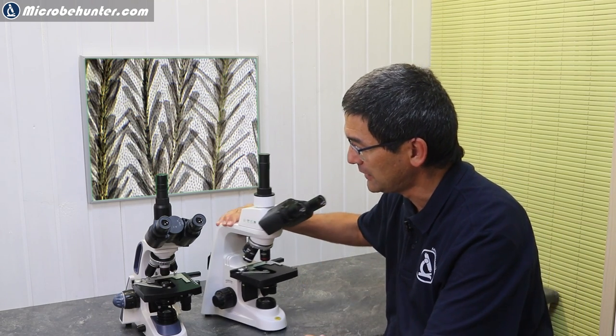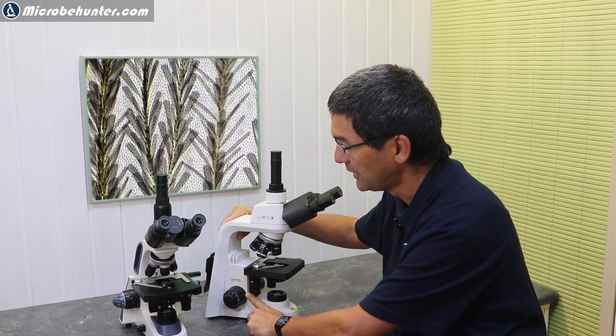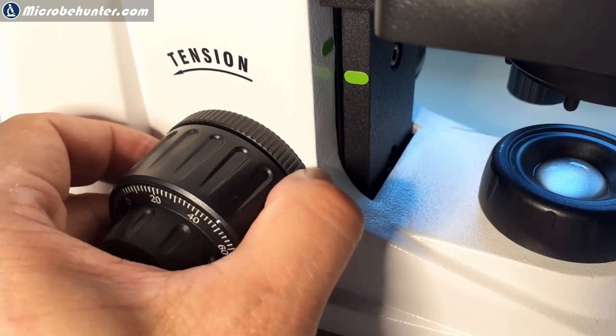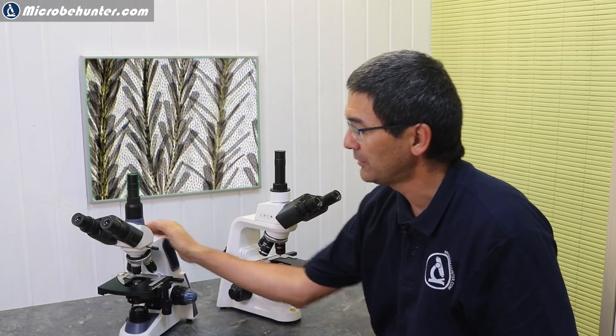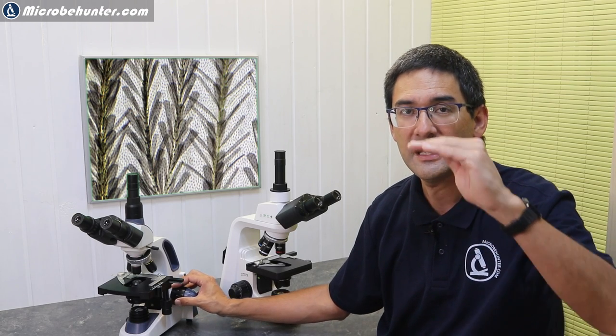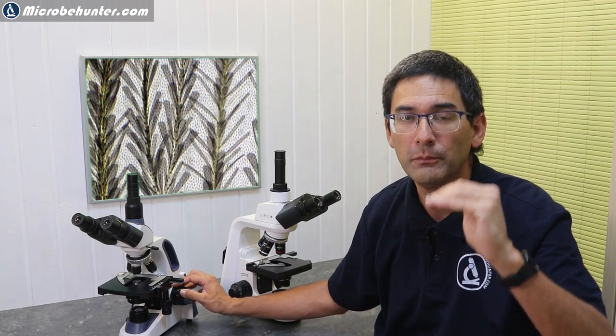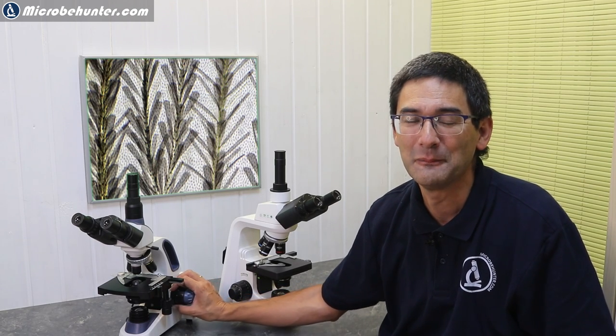Both microscopes allow you also to adjust the tension of the coarse focus knob. It's done a little bit differently. Here on the Stellar One you actually see it on the left side—there is a ring that can be turned to adjust the tension. On the other one, there is a ring on the right side. If you feel that the stage lowers down due to its own weight, then you know that you have to increase the tension a little bit more by turning this tension wheel.